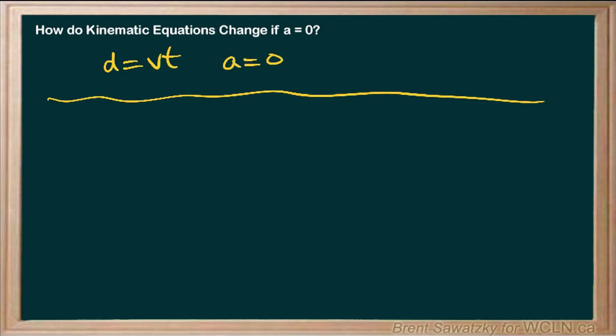That simple formula makes the assumption that acceleration is zero. It only works if acceleration is zero, and therefore the velocity isn't changing. Then that equation works fantastic. But when you get into more real-world situations, there are accelerations going on and velocity does change. That's why we run into more sophisticated formulas. Let's take a look at some of these and see how they relate to our old favorite, simple d equals vt.